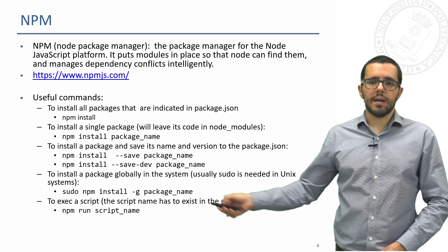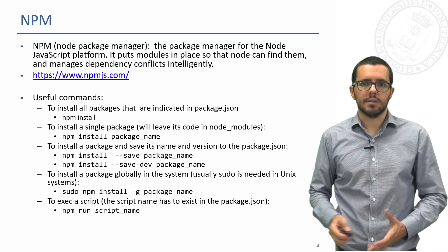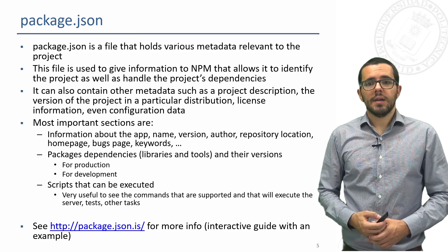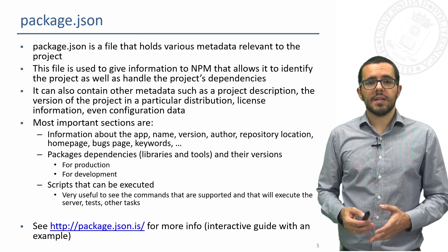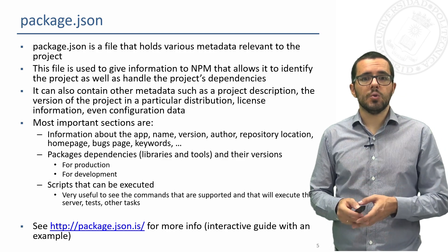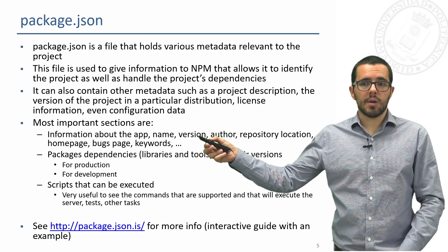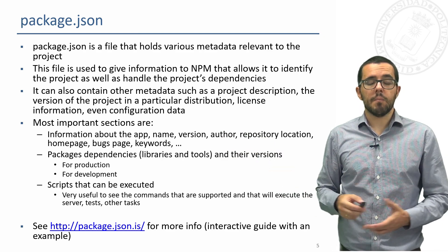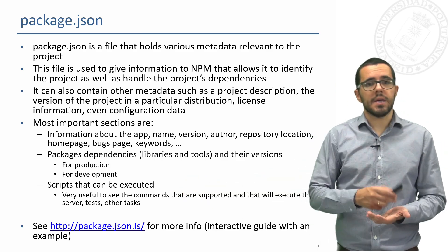Finally we can run a script name — a script that will be indicated in the package.json. The package.json file is just a file with several metadata of the project. It includes the dependencies, the npm packages that you need to run this project. But it also includes information about the application: the version, the author, the repository, and many other meta information. And also scripts that can be executed with npm run.